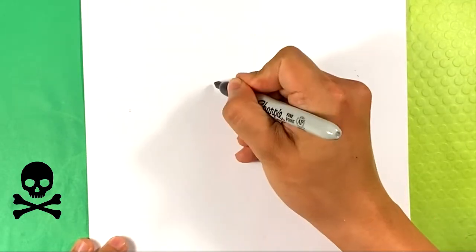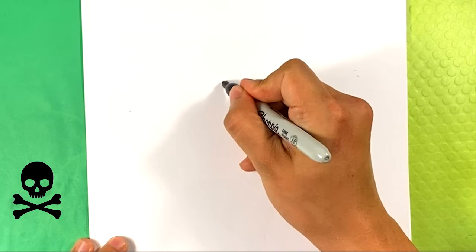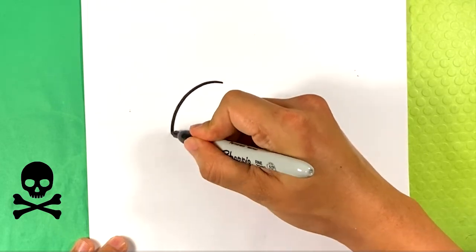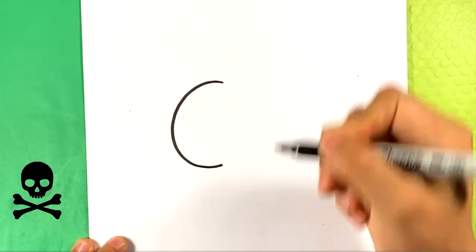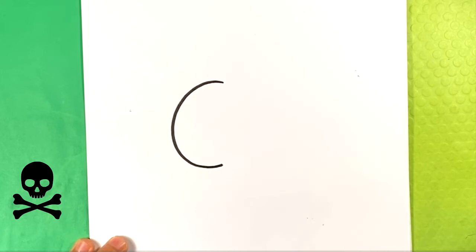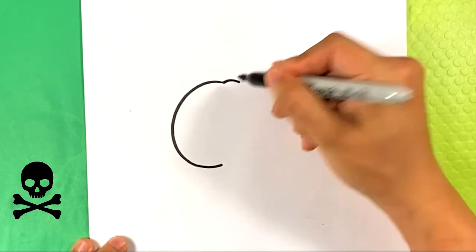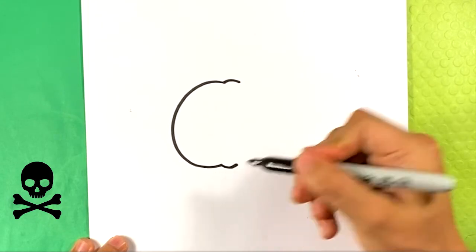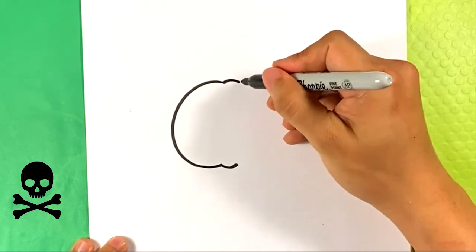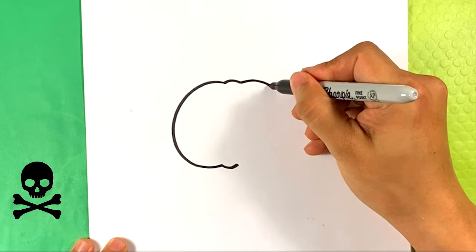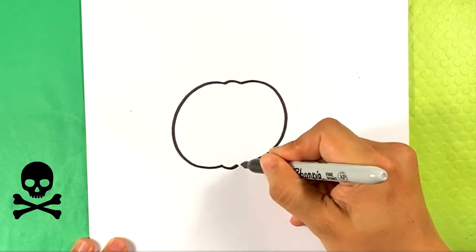I'm going to go over here and I'm going to draw a C shape. I'm going to go over here now, maybe give a bump there, maybe a bump here, and then curve over here.